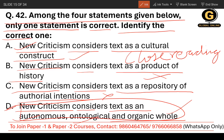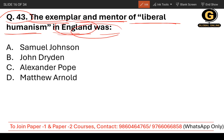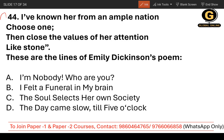Some of the critics and theorists associated with New Criticism include Allen Tate, Robert Penn Warren, John Crowe Ransom, and Cleanth Brooks. Question number 43: The exemplar and mentor of liberal humanism in England was — the options are Samuel Johnson, John Dryden, Alexander Pope, and Matthew Arnold. The correct option is Matthew Arnold.